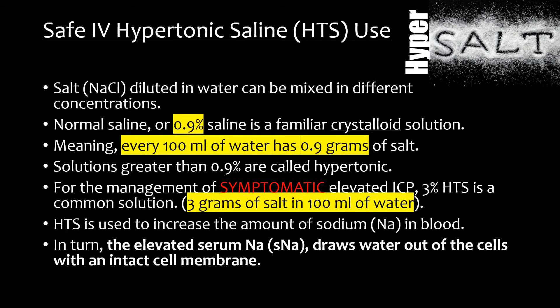Salt or sodium chloride diluted in water can be mixed in different concentrations. Normal saline, or 0.9% saline, is a familiar crystalloid solution, meaning every 100 milliliters of water has 0.9 grams of salt. Solutions greater than 0.9% are called hypertonic. For the management of symptomatic elevated ICP, 3% hypertonic saline is a common solution.